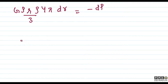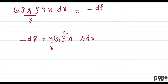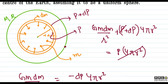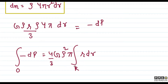Rearrange karte hain: minus dP equals G rho squared times (4/3) pi times r dr. Ab dono taraf integrate karenge. Humein pata hai ki jab small r equal to capital R ho, to pressure 0 hota hai, kyunki surface par koi mass nahi hai jo usse press kar sake. Toh integration mein: minus dp ka integral p se le kar P, aur r ka integral capital R se le kar small r, toh minus P equals (4/3) G rho squared pi times (r squared minus R squared) upon 2.